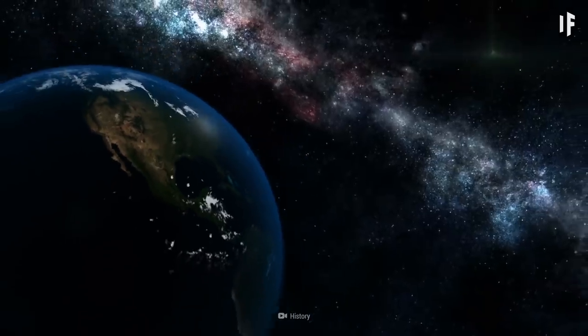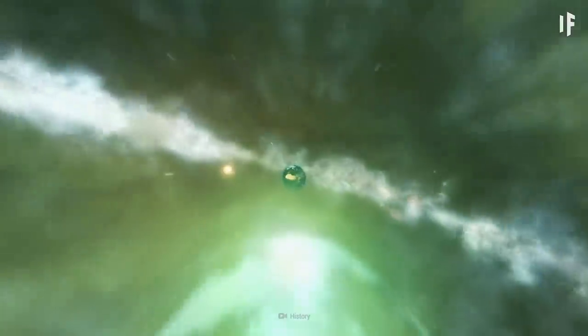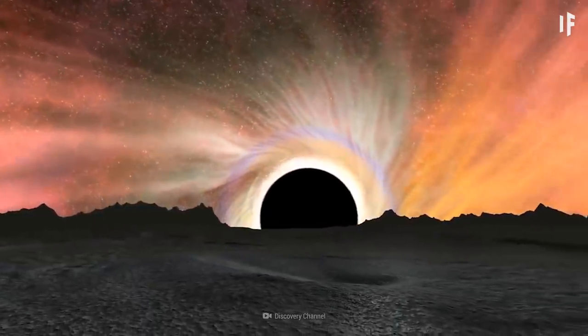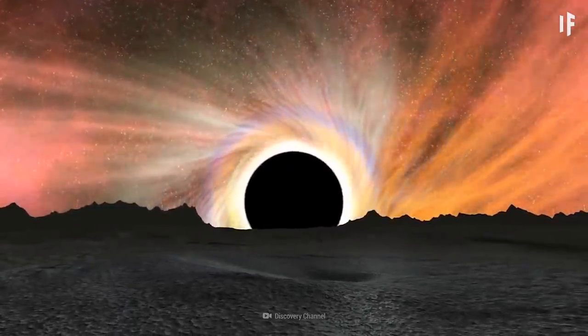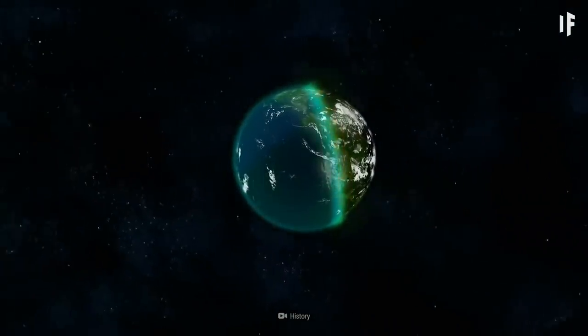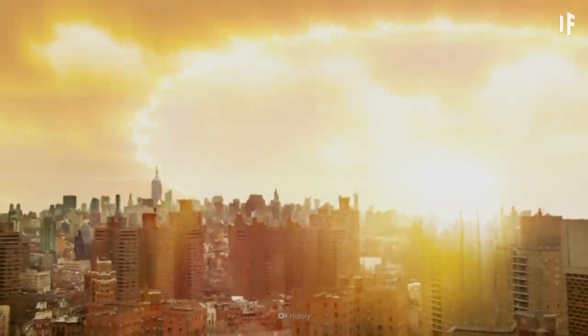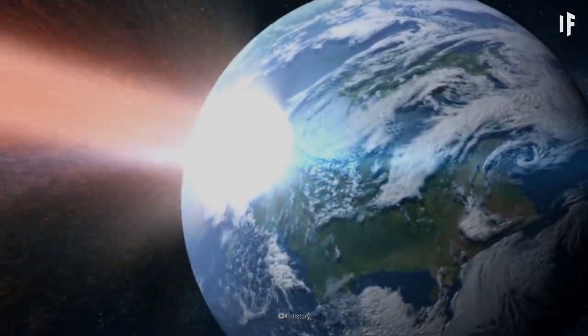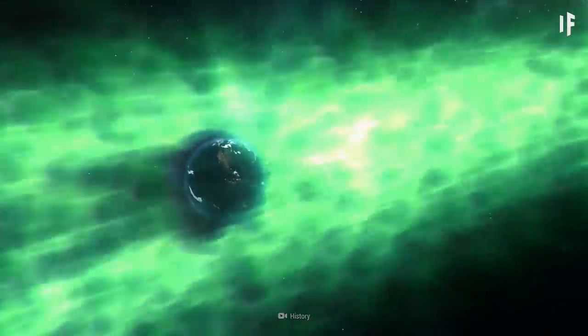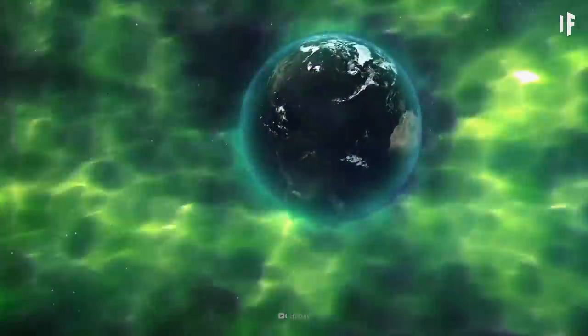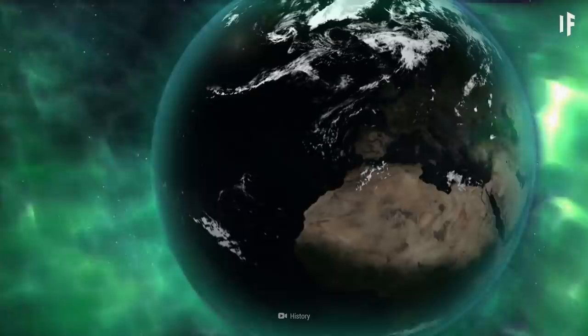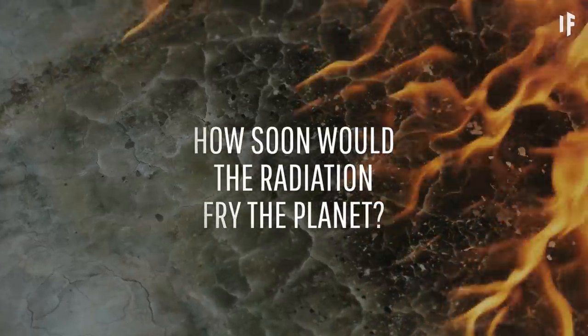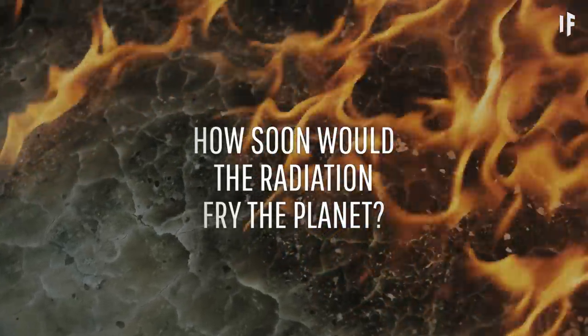Unfortunately for planet Earth, we lay right in the path of a jet stream from Sagittarius A, the supermassive black hole in the Milky Way. Superhot particles ejected from the black hole would slam into our planet along with lethal levels of radiation. Once the X-ray and gamma-ray photons reached Earth, they would destroy the ozone layer within months. With this protective layer gone, how long would it take for the radiation to fry the planet?